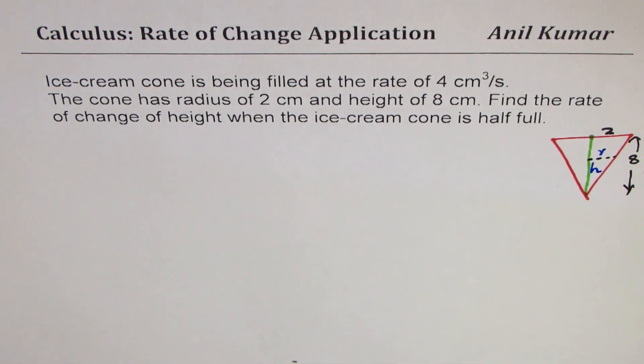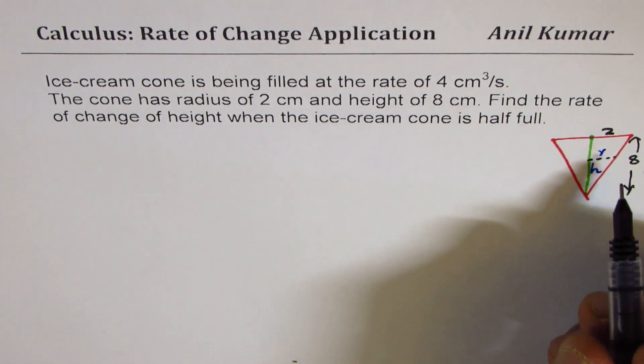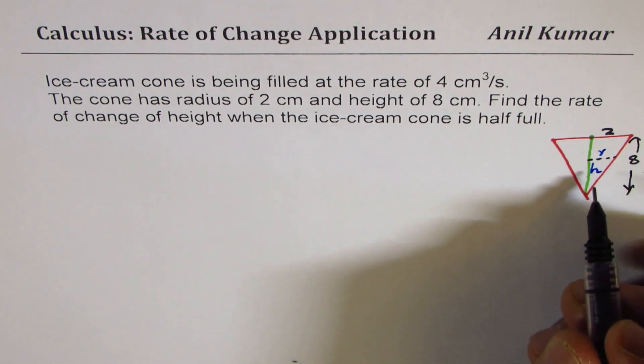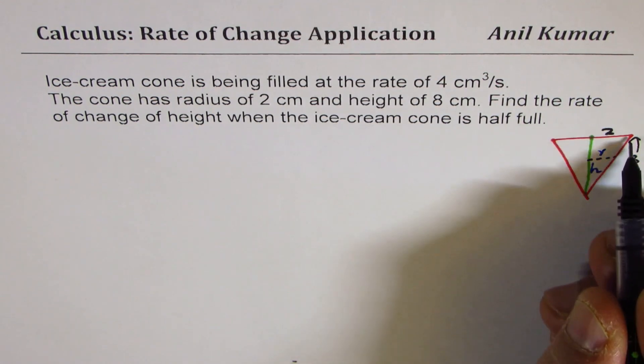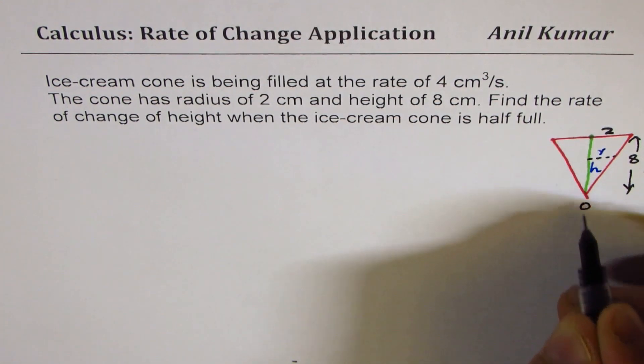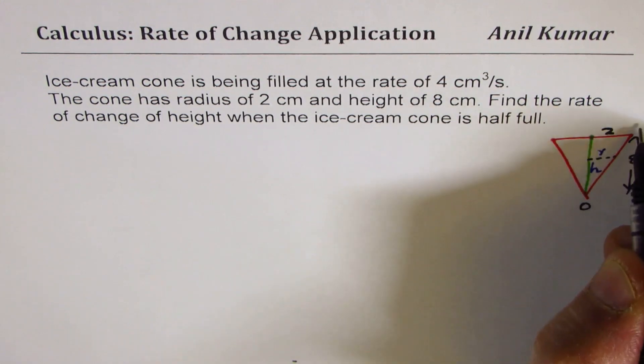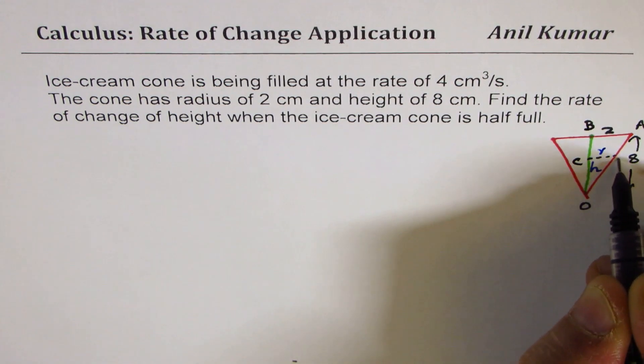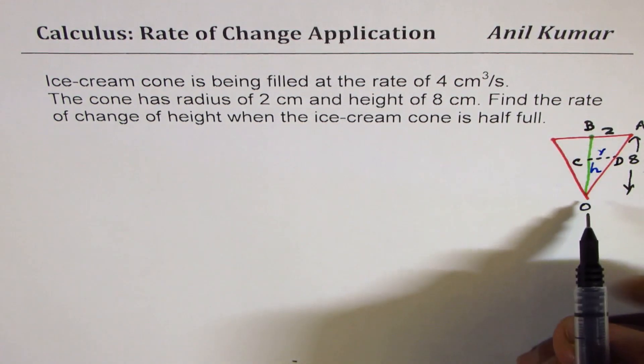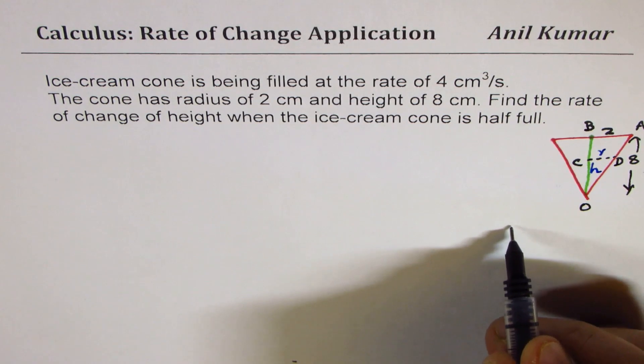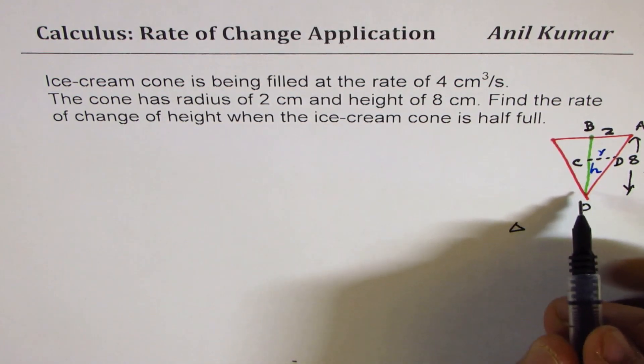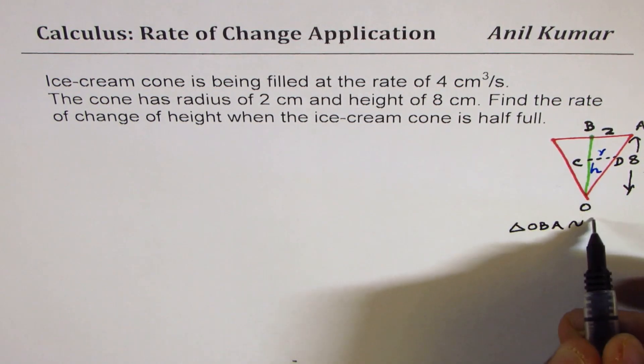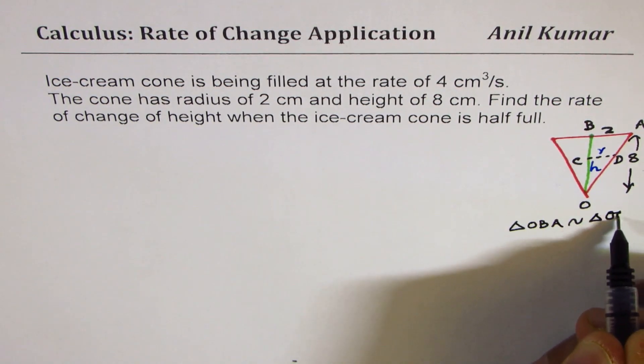In that case, we know that the ratio of radius to height will be—these two are similar triangles. You see the big triangle? Let me label them O. Let's say this is A and this is B and this point, this is C and this is D. So in that case, you notice that triangle OBA is similar to triangle OCD, right?